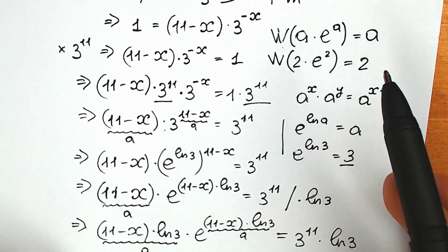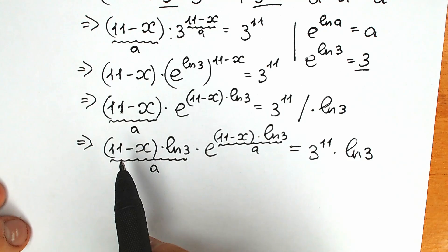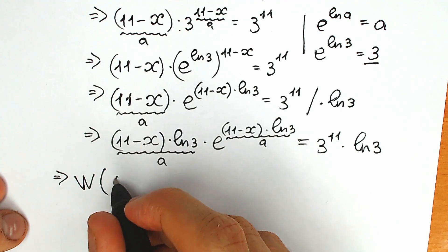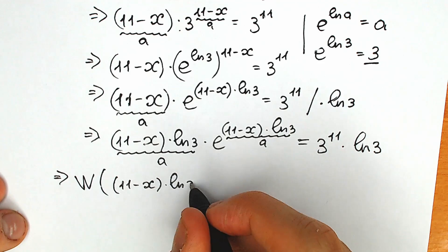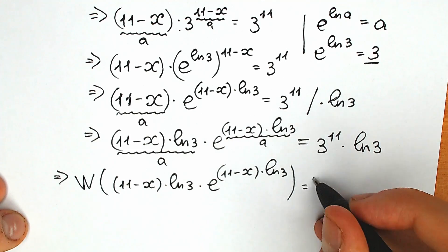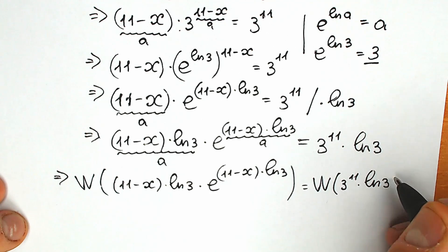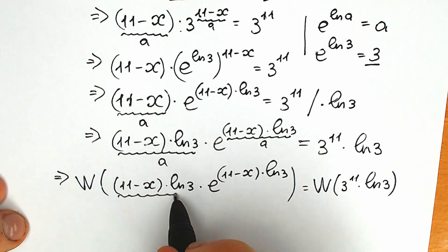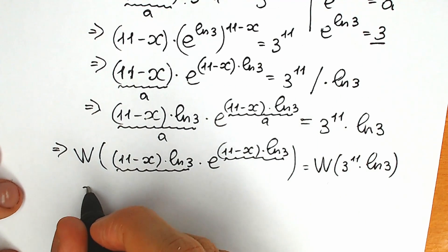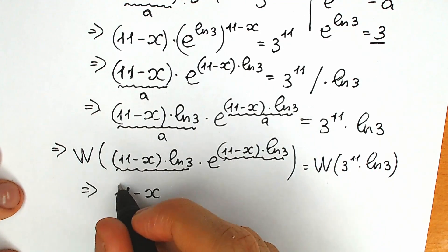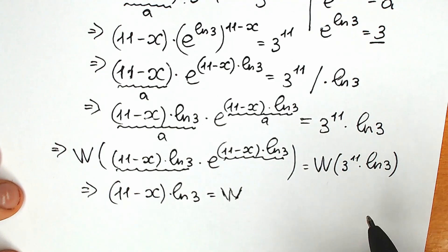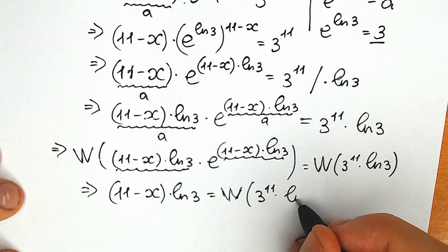Now let's apply the Lambert W function to our expression — on both sides. Applying W to the left side: W of [(11 minus x) times natural log 3 times e to the power ((11 minus x) times natural log 3)] equals W of [3 to the power 11 times natural log 3]. According to the Lambert W function definition, the left side simplifies to just our a, which is (11 minus x) times natural log 3. So we have (11 minus x) times natural log 3 equals W(3^11 times natural log 3).